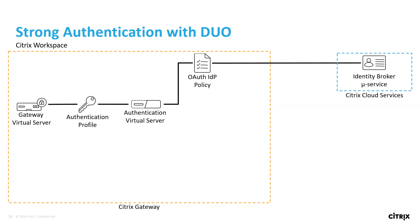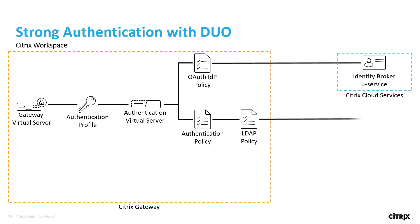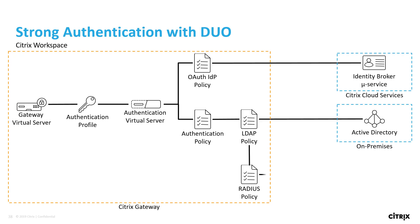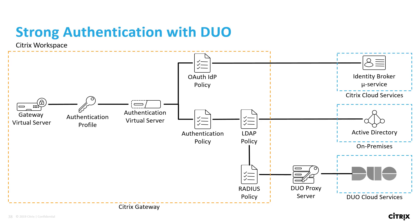The second part of the authentication virtual server is an advanced authentication policy that defines our authentication flow. First we have the user authenticate with our LDAP policy, which creates a link to our on-premises Active Directory domain. Upon success, the LDAP policy adds a second factor, which is a RADIUS policy pointing to our on-premises Duo proxy server. The Duo proxy server creates a link to our organization's Duo cloud services subscription and a specific application API.